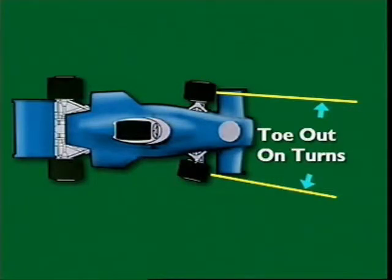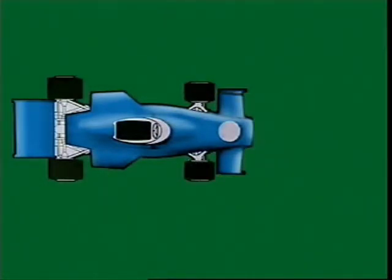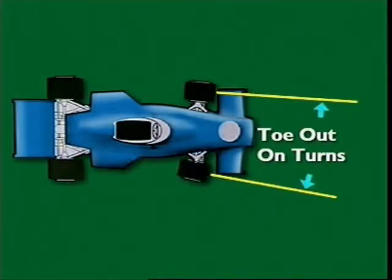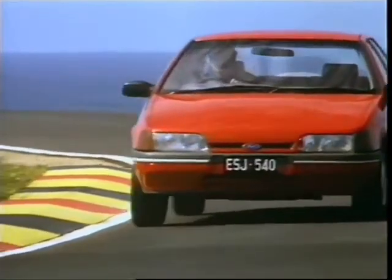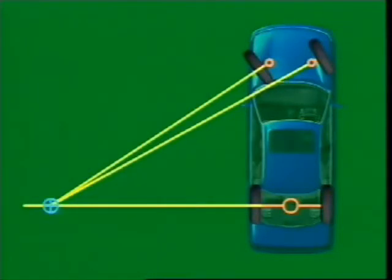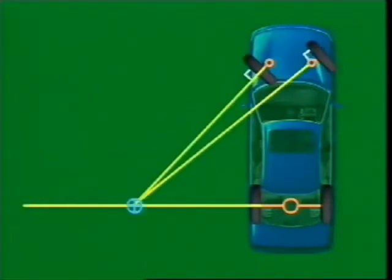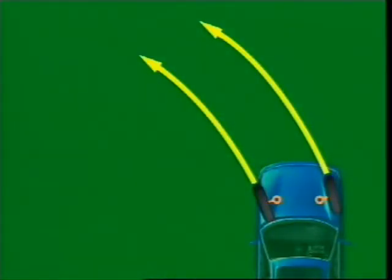This section examines toe-out on turns. Toe-out on turns is the relative toe setting of the front wheels as they turn left or right. When a vehicle makes a turn, each wheel should rotate with true rolling motion free from tyre scrub. True rolling motion is only obtained when each wheel is at 90 degrees to a line drawn between the swivel axis and the centre of turn. Because the rear wheels are fixed, the centre of turn lies along the rear axle centre line. To provide true rolling motion, the inner wheel must be turned through a greater angle than the outer wheel. This automatically correct alignment is obtained by use of the Ackermann principle.